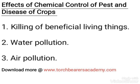Effects of chemical control of pests and diseases: One, chemicals can kill spiders and other animals that are of great benefit. Two, chemicals can be washed away by rain into streams and rivers, resulting in water pollution and deaths of aquatic organisms like fishes. Number three, chemicals blown away by the wind contaminate the air, thereby killing birds and other land animals.